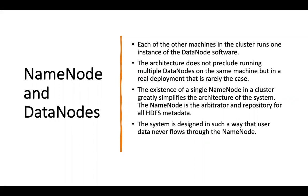The architecture does allow running multiple Data Nodes on a single machine, but it is not recommended in a real deployment because it will compromise the fault tolerance of HDFS. The existence of a single Name Node in the cluster greatly simplifies the architecture. The Name Node acts as the operator and repository for all HDFS metadata, and the system is designed so that user data never flows through the Name Node.